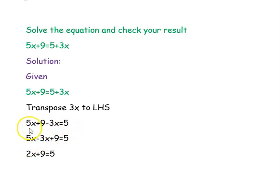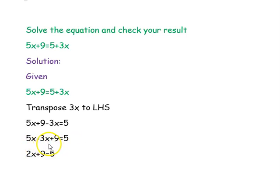Now we are going to simplify this. So, 5x minus 3x plus 9 equal to 5. 5x minus 3x is 2x, so 2x plus 9 equal to 5.